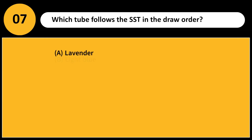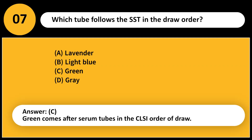Which tube follows the SST in the draw order? A. Lavender. B. Light blue. C. Green. D. Gray. Answer: C. Green comes after serum tubes in the CLSI order of draw.